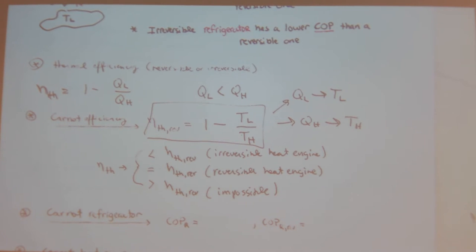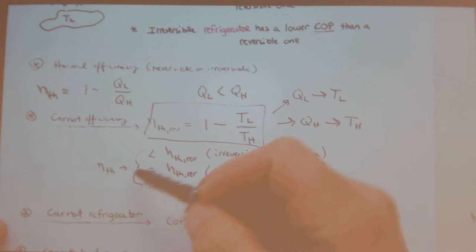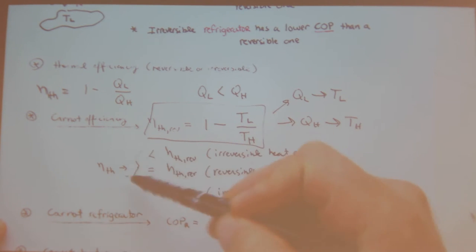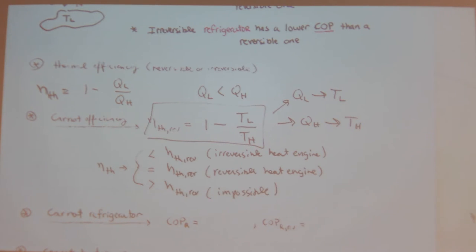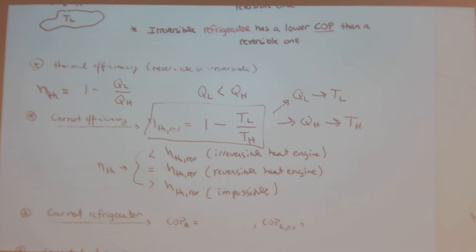As an engineer, calculations on thermal efficiencies and Carnot are good benchmarks before you get your hands dirty. Thermodynamics gives you a signal to stop — stop turning the wrench or telling the machinist to make something — because something is already projected to violate some law of thermodynamics.